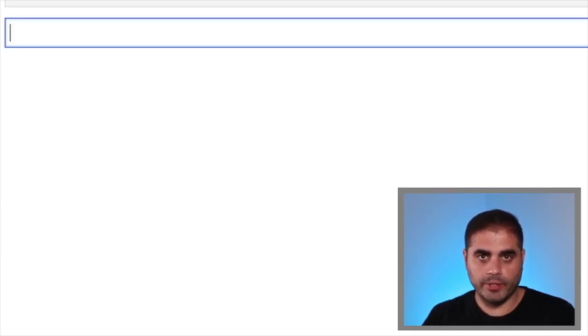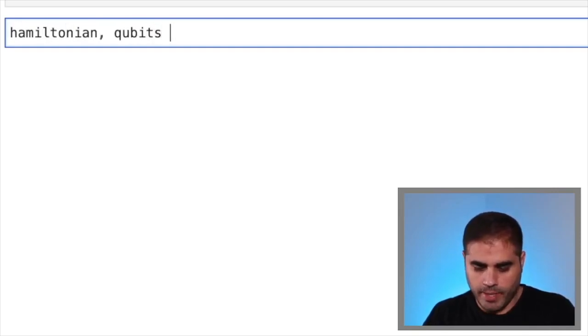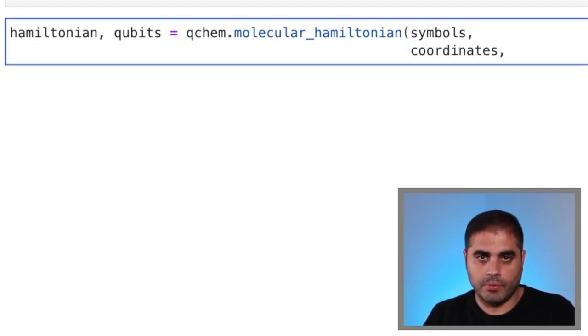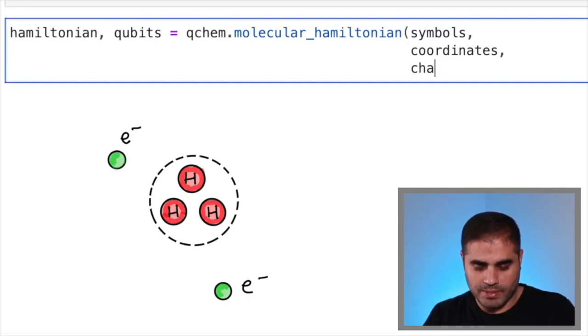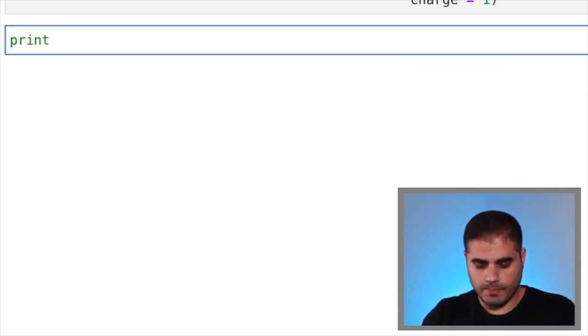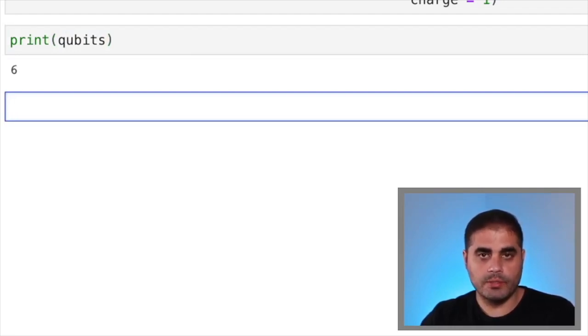Now, in order to define our molecular Hamiltonian, we need the qchem library. So to do that, we just write Hamiltonian comma qubits, because this command is also going to calculate the number of qubits that we need for our model. And we do qchem.molecular_Hamiltonian. And we need to give it both the symbols and the coordinates that we defined before. Now, in VQE, it's easier to work with two electrons than it is to work with the three electrons that a neutral molecule of H3 has. So let's cheat a bit and make this actually an H3 ion. So for that, we specify that the charge is going to be positive one. So we've removed one electron, and we have two electrons. If we print out qubits, we will see that we actually need six qubits to model our molecule.